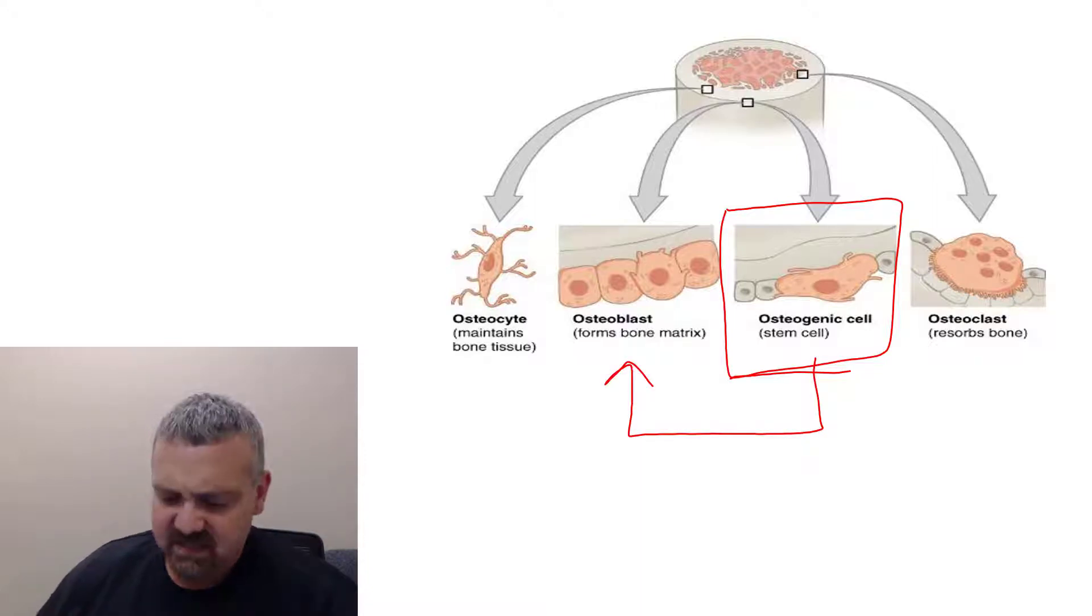Osteoblast basically means bone build, or how I remember it is blasts build bone. So an osteoprogenitor cell or an osteogenic cell will become an osteoblast. Osteoblasts are able to build bone.